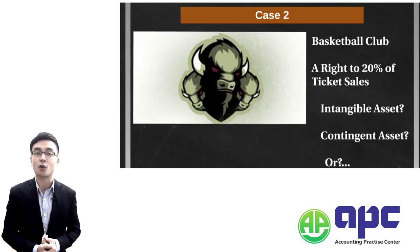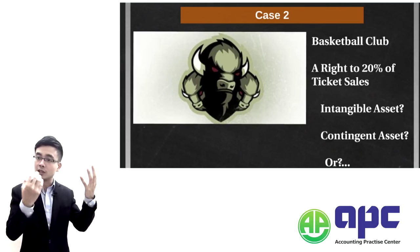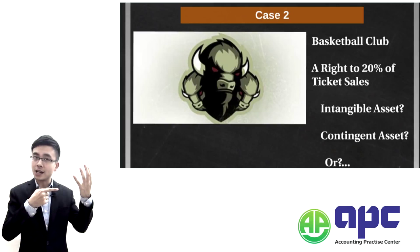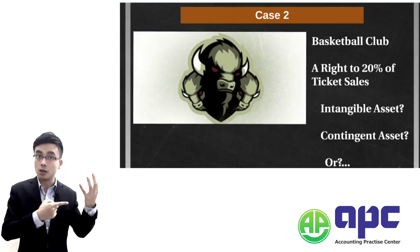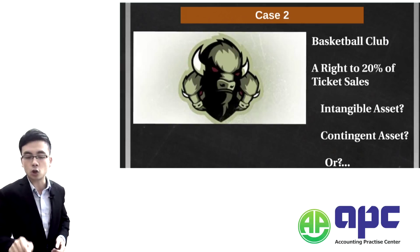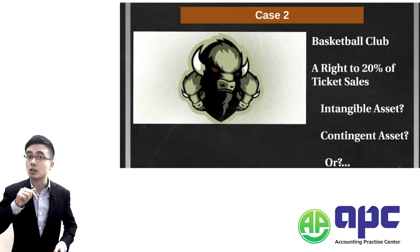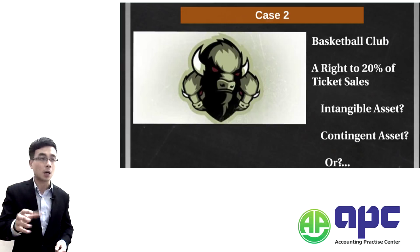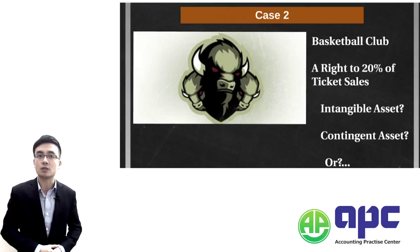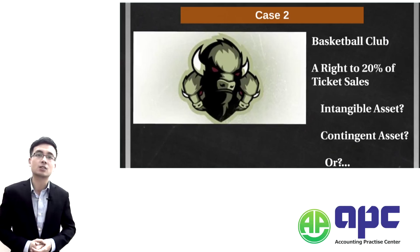Within the non-current asset section, when preparing the statement of financial position we follow the accounting equation: assets equals liability plus equity. Assets can be non-current assets — used by the business for more than one year — or current assets such as inventory, cash, and receivables. This case is about a basketball club where you buy a right from that club because the basketball club sells tickets for competitions, and you buy a right to enjoy 20% of their ticket sales.